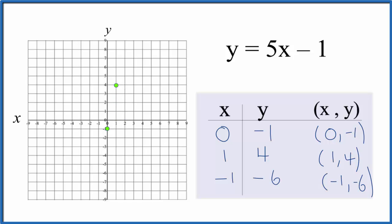And we could stop there, draw our line, but it's nice to have that third point to make sure that we did the first part correctly. X is negative 1, y is negative 6. So there we have our line. Let's put a line through that. We could put arrows to show that this goes to infinity. There's our graph for y equals 5x minus 1.